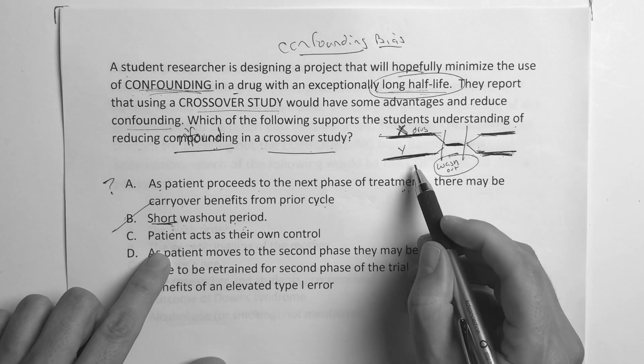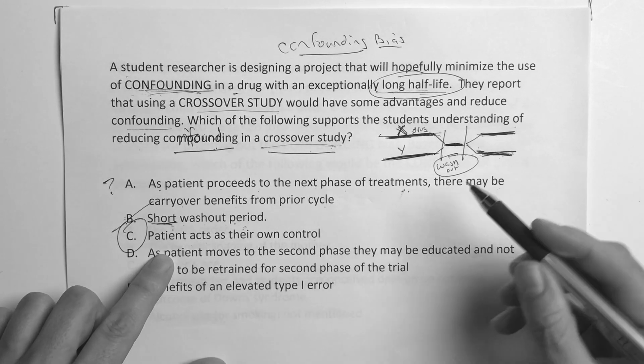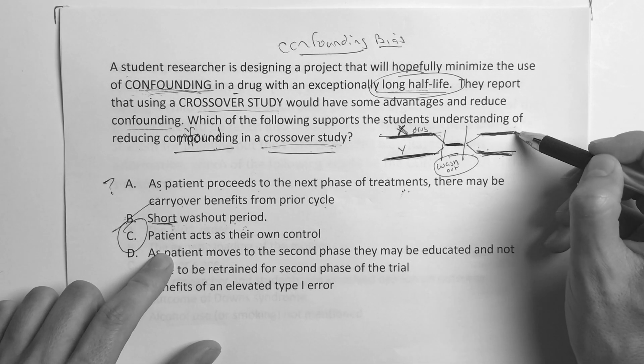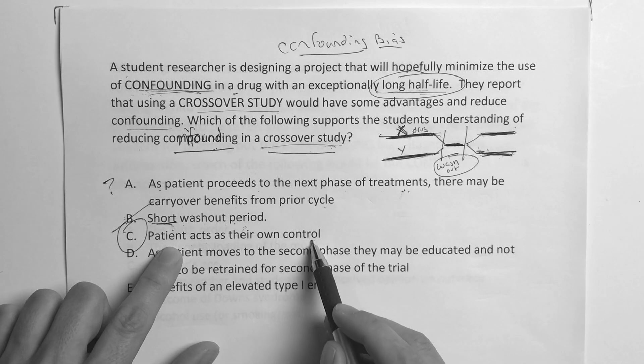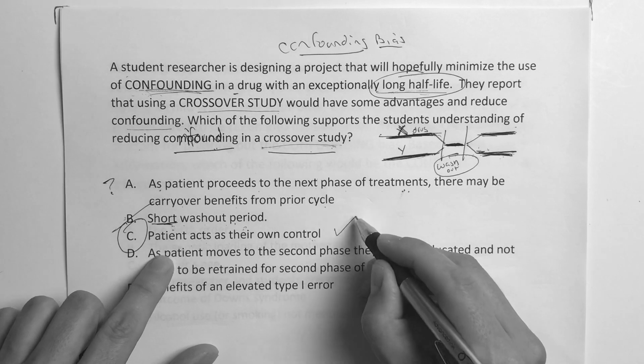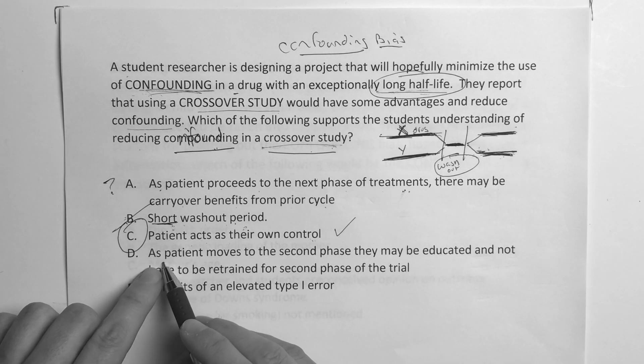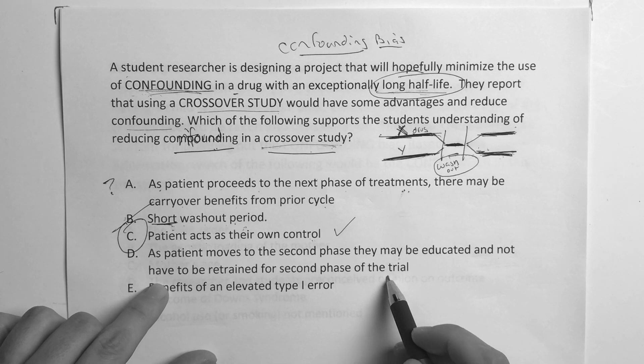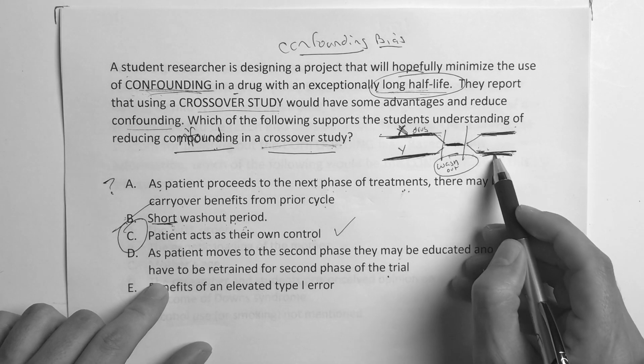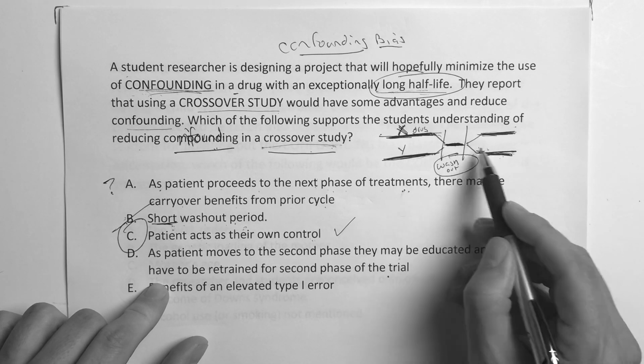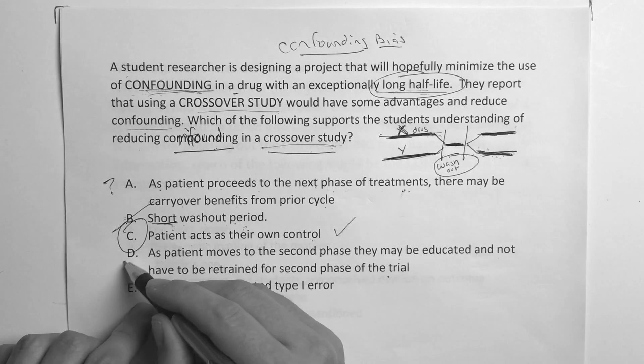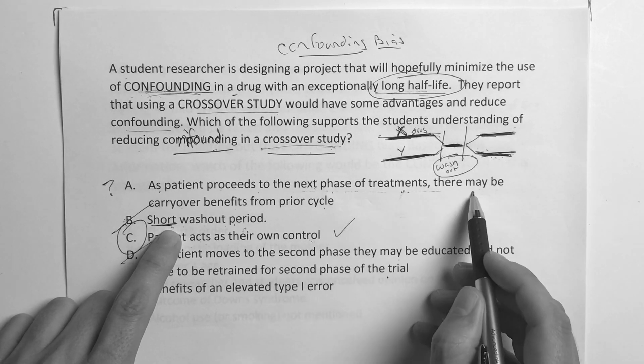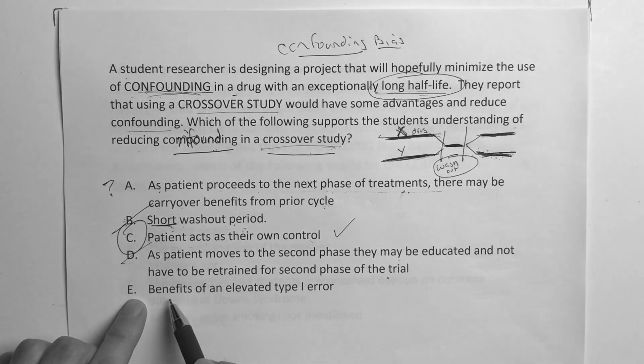Patient acts as their own control. Yes. In a crossover study, that's kind of the genius of the study, is that the patient, if they're the placebo right here, and then they cross over and now get the drug, or vice versa, they act as their own control in that situation. So that's one of the benefits of being in a crossover study. Now, as D says, as the patient moves to the second phase, they may be educated and not have to be retrained. No. That goes back to what I was probably explaining for A, is that if they carry over anything from it, they could be influenced from one phase to the next phase, and that could impact the results over here.